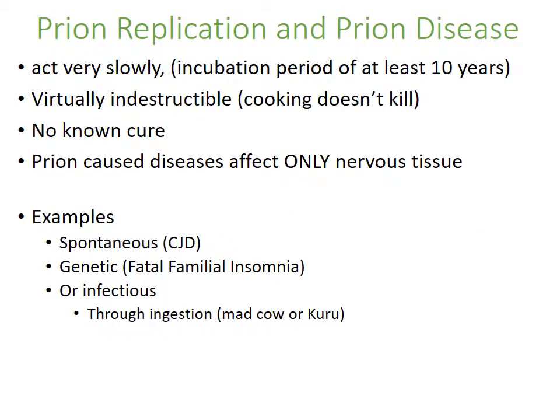Prions act very slowly — with an incubation period of about 10 years. Prions are virtually indestructible; regular cooking doesn't kill them. There's no known cure for prion diseases — all we can do is support people who've had it. Prion diseases have only been found to affect nervous tissues. Examples include Creutzfeldt-Jakob disease (CJD), which can be spontaneous, genetic (fatal familial insomnia), or infectious through ingestion like mad cow or kuru. Mad cow made cows wobbly due to lack of nervous system control. Kuru is passed on through cannibalism. Chronic wasting disease in deer and elk is another prion disease.